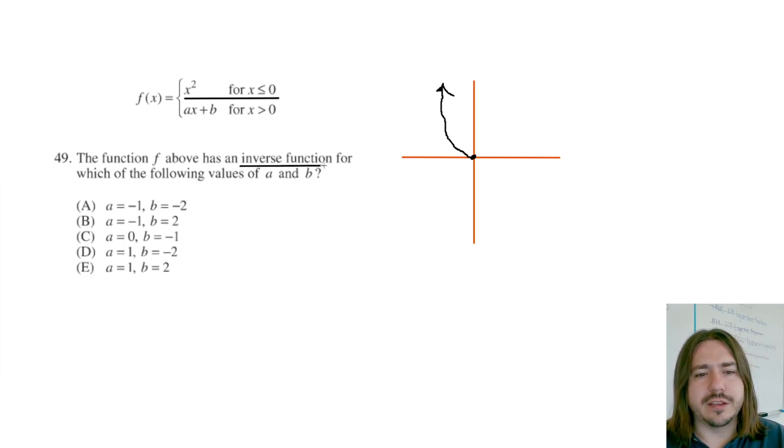So what it's really saying is that this is the function, right? Now every function does have an inverse. So any of these values could work as far as the function having an inverse period. But what this is really asking is for which of these combinations is the inverse a function. So a function is a relationship where each input only has one output. An inverse is where you swap your inputs and outputs. So typically your inputs are x's and your outputs are y's.